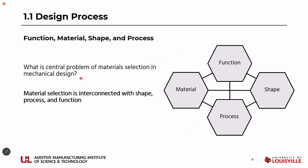If you are designing any mechanical component, it mainly depends on four things — four main pillars: what is the material of the part, what is the function of the part, how are you going to manufacture it, and what is the shape of the part. They are very much interlinked.